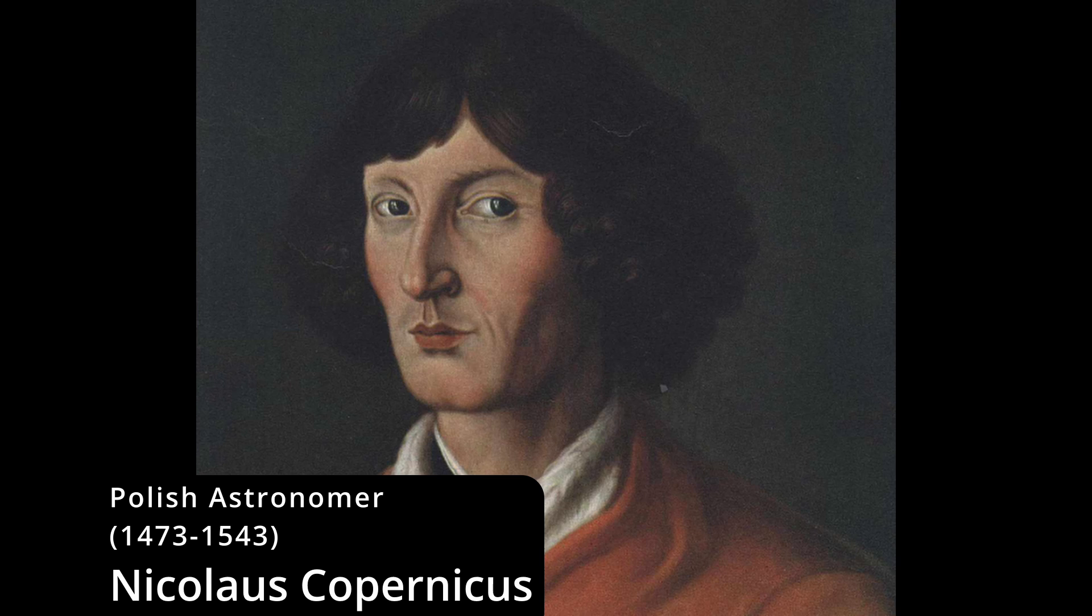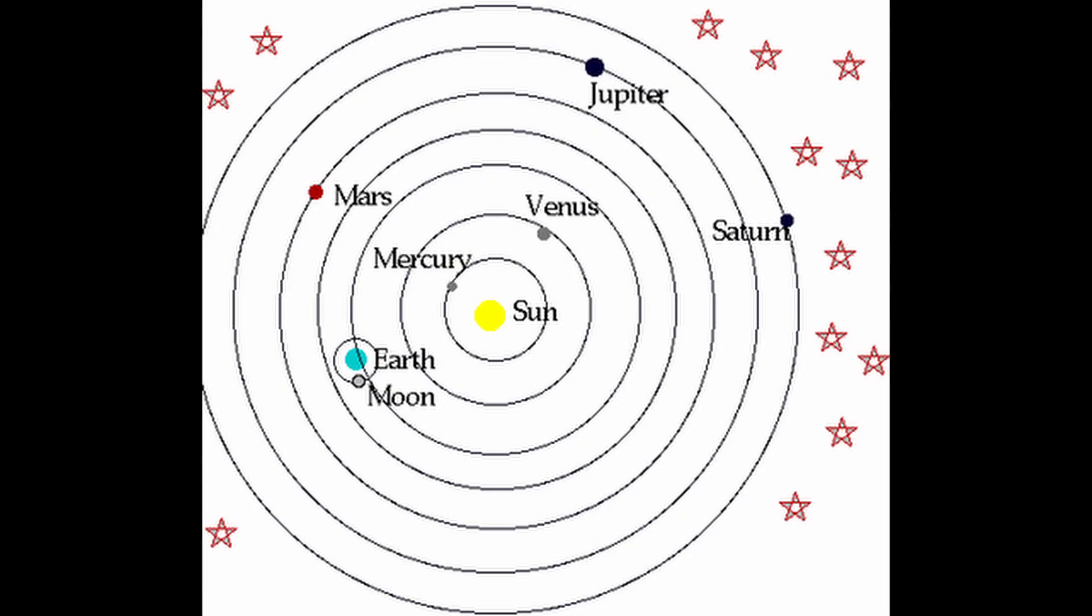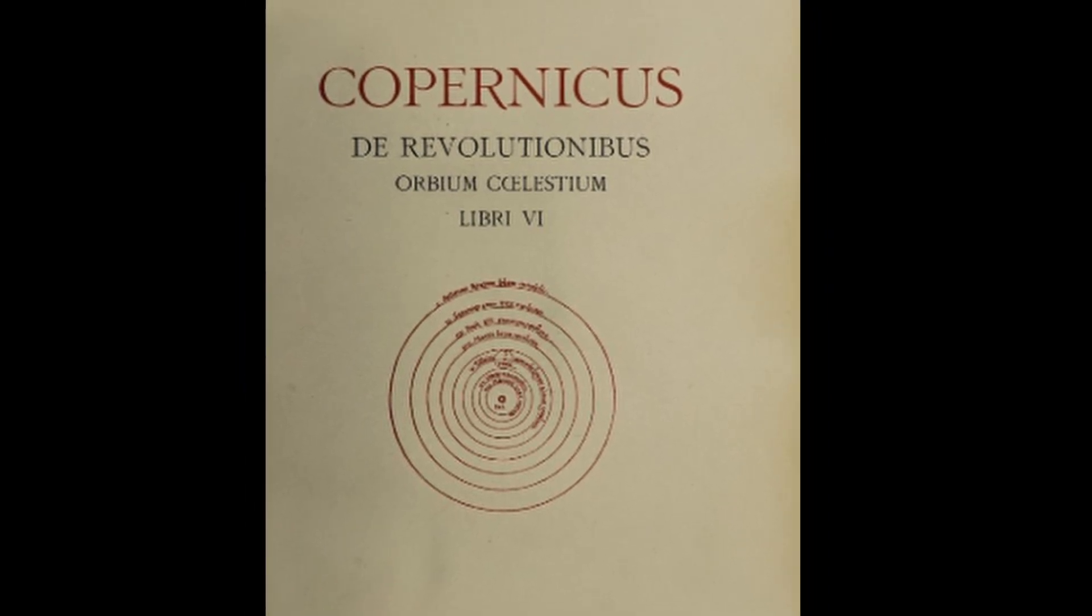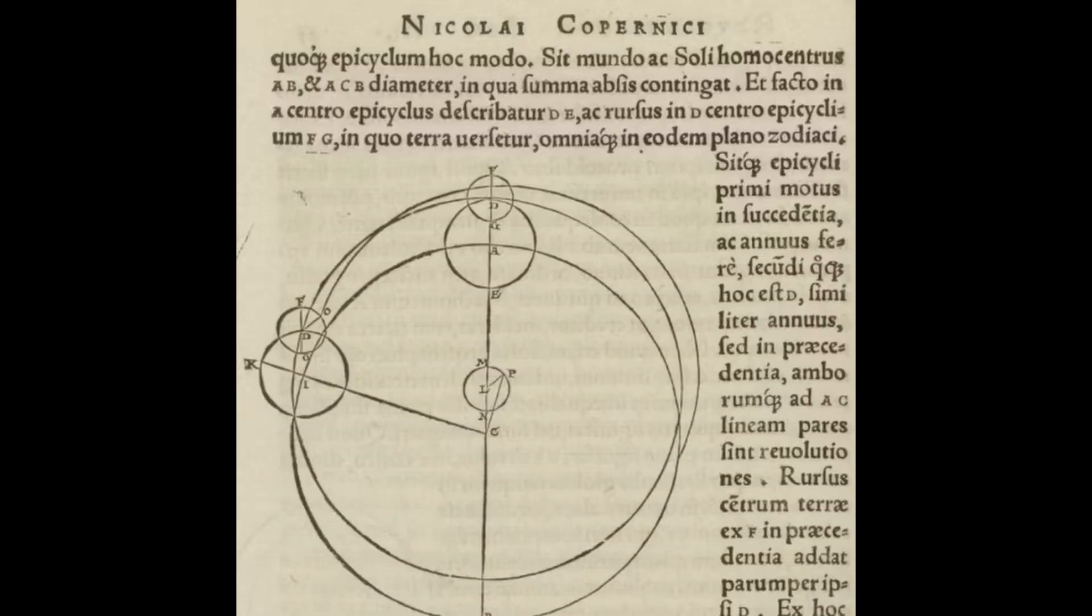In the 16th century, Nicolaus Copernicus proposed the heliocentric model, which placed the Sun at the centre of the universe, with the Earth and other planets orbiting around it. His ideas were published in his 1543 work on the revolutions of the celestial spheres, which presented a mathematical model for heliocentric astronomy.